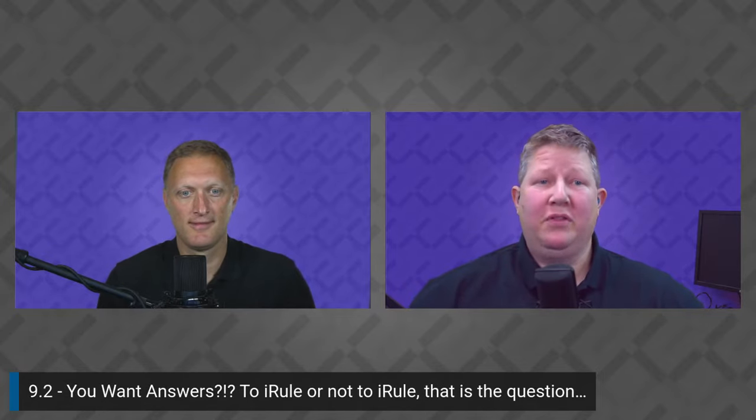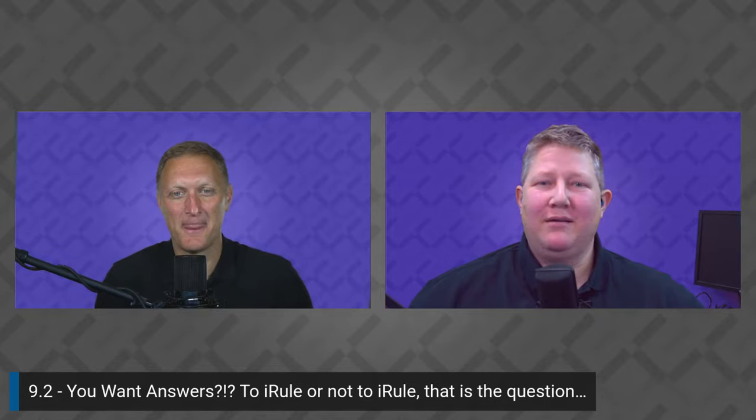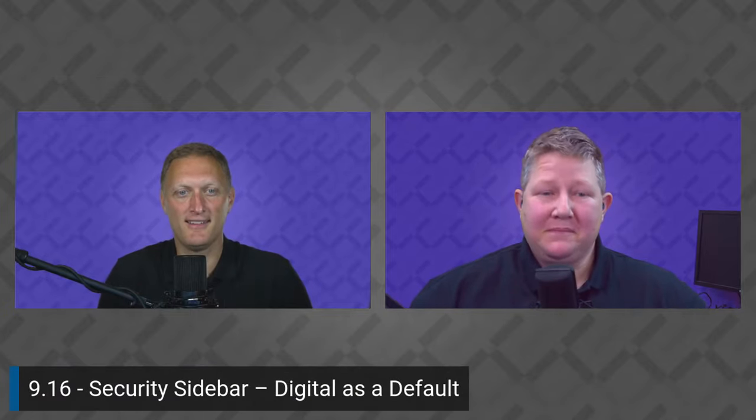Coming up next week, fantastic guest Timo Stark joins us for a demo and we'll recap NGINX Sprint. Two weeks from today, I'm back with 'To iRule or Not to iRule' — continuing the iRule theme. Then on September 9th we have a fantastic guest from JPL, the Jet Propulsion Lab — can't wait. After that, security sidebar with John: 'Digital as Defaults' — what does that even mean and what are the security implications? That's going to be a lot of fun.